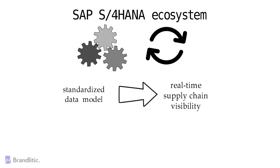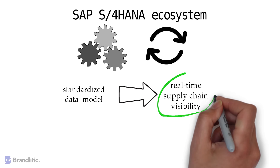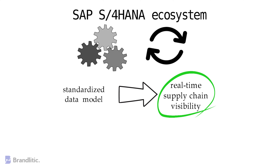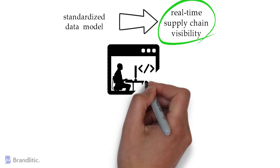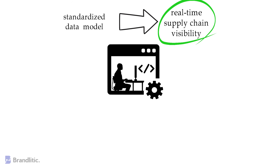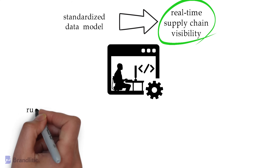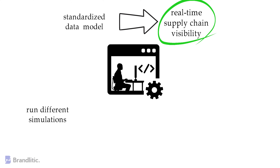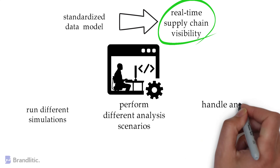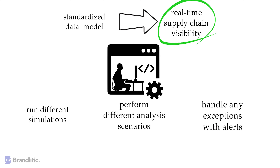Having a real-time vision is a great help when it comes to making business decisions. This is only possible thanks to the dedicated integrated planning environment of SAP IBP, which allows multiple users to run different simulations, perform different scenarios in the planning cycle, and makes it easy to handle any exception with the system alerts.